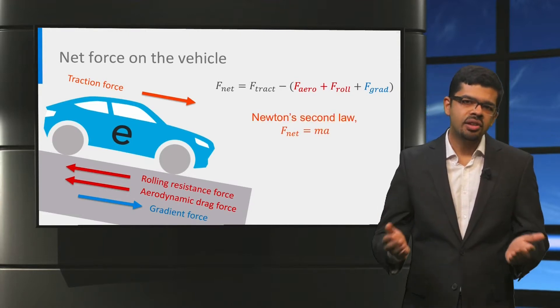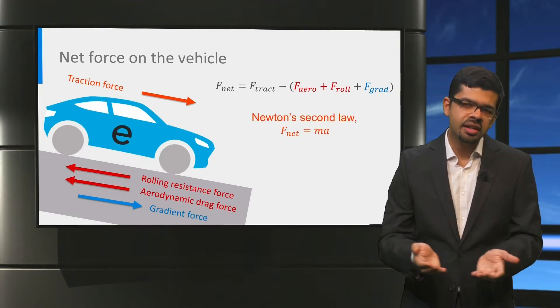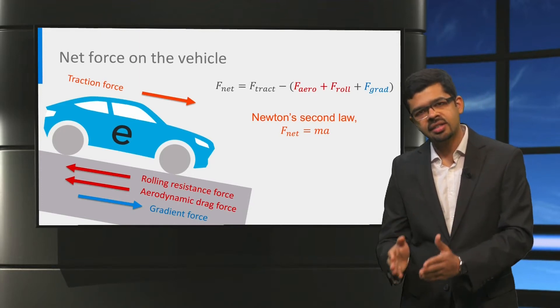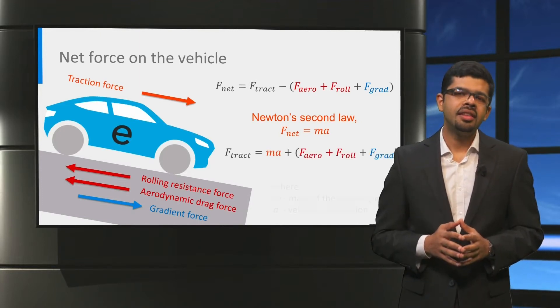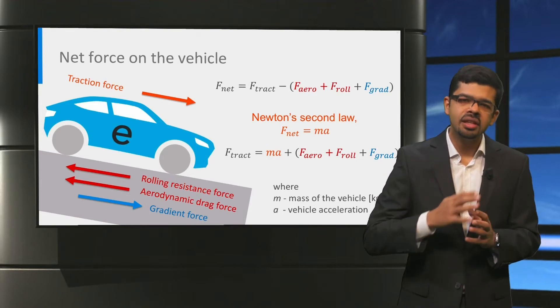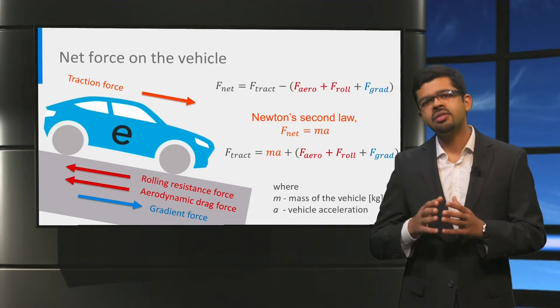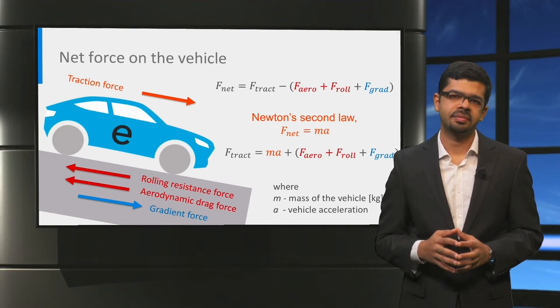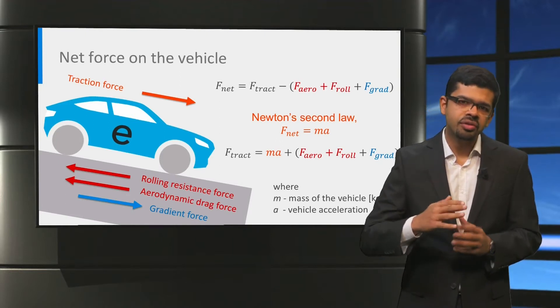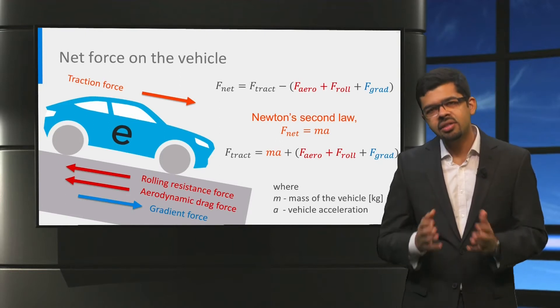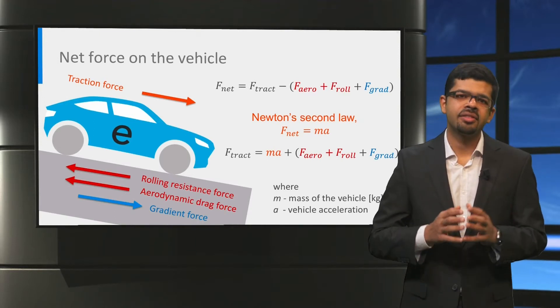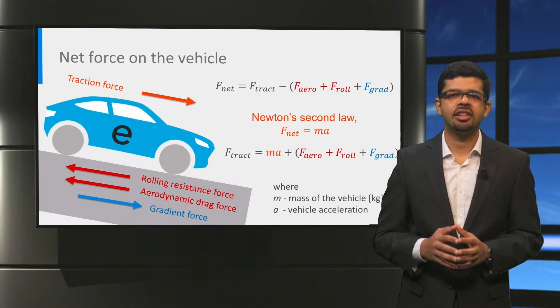By Newton's second law, the net force on the vehicle is equal to the product of the vehicle mass and the vehicle acceleration. Therefore, we can control the vehicle acceleration and thereby the speed by controlling the traction force that the powertrain produces. The traction force is in the driving direction most of the time but can be zero when the vehicle is coasting or even negative when the powertrain is under regenerative braking.